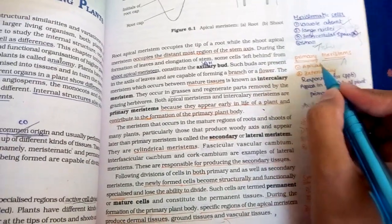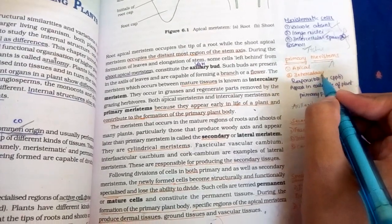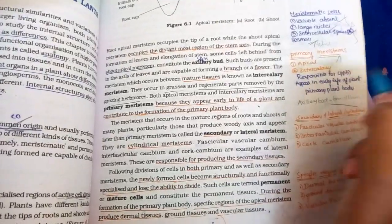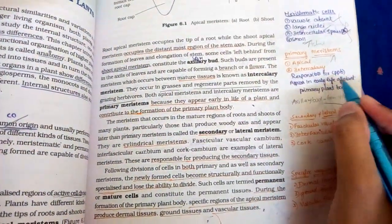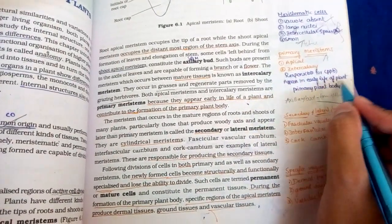Primary meristem fit two types: apical meristem and intercalary meristem. They are responsible for the formation of primary plant body and they appear in early life of plant.